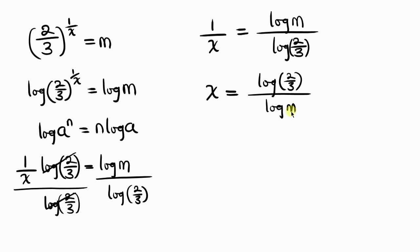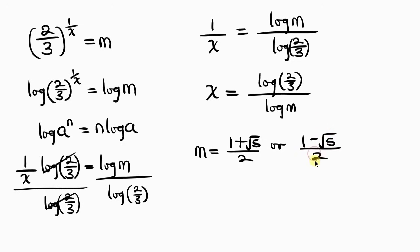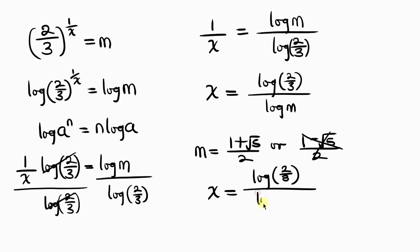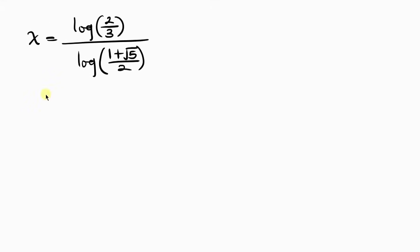Now we substitute the value of m. Since the second value (1 − √5)/2 is negative and we're working with logarithms, we discard it and use only m = (1 + √5)/2. So x equals log(2/3) divided by log[(1 + √5)/2].